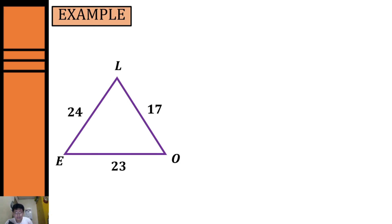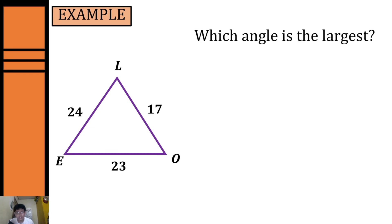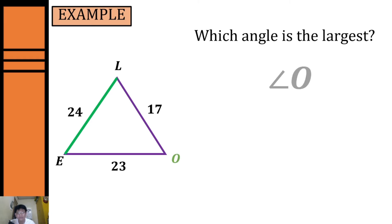Let's have our last example. We have a triangle and we're looking for the largest angle. We're given the measurement of each side. To determine our largest angle we have to identify our longest side. Our longest side is side LE with 24. Using the Side Angle Inequality Theorem, the angle opposite the longest side will be the largest angle, so our largest angle will be angle O.